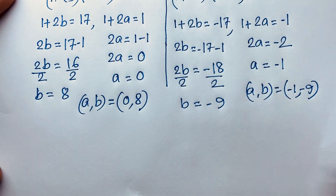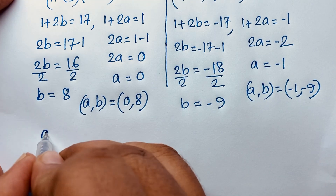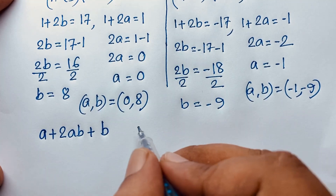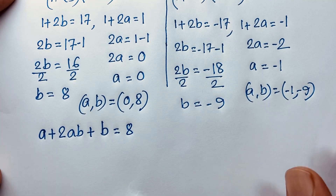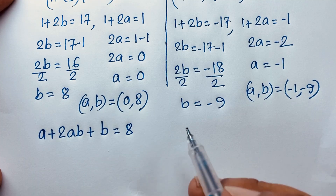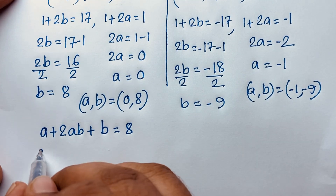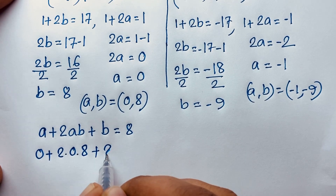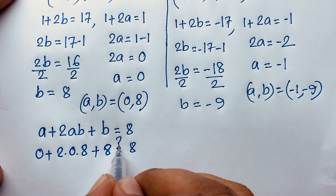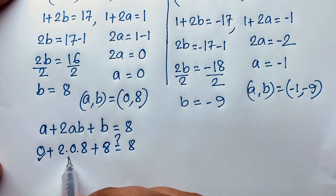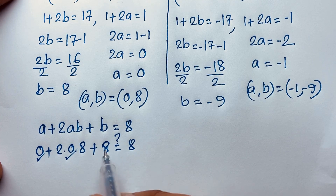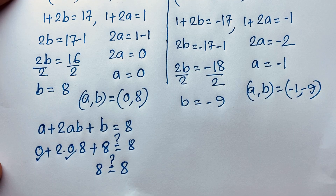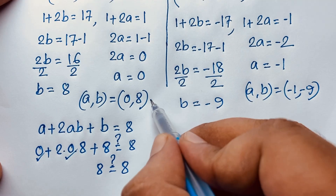Let's check our question: A plus 2AB plus B equals 8. For the first case, A equals 0 and B equals 8: 0 plus 2 times 0 times 8 plus 8 equals 8. You can see: 0 plus 0 plus 8 equals 8. Left hand side equals right hand side, so (A, B) equals (0, 8) is the correct answer.